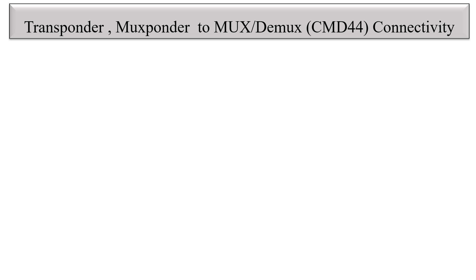Hello friends. In today's video we will discuss Transponder-Muxponder to MUX-DMux connectivity. Here I have taken the CMD44 as MUX-DMux. CMD44 is basically a MUX-DMux having a fixed channel for each port, meaning each port has a specific frequency. The Transponder-Muxponder which produces the same wavelength can be connected on that port. So this is the fixed frequency MUX-DMux.